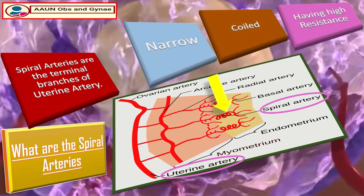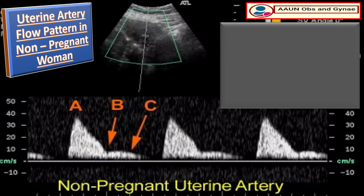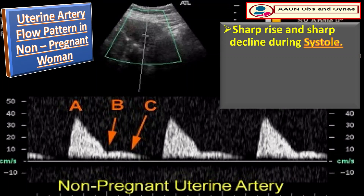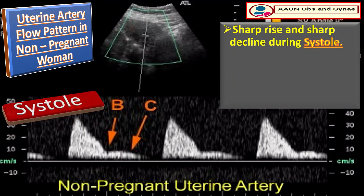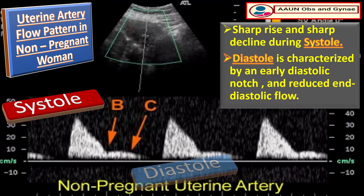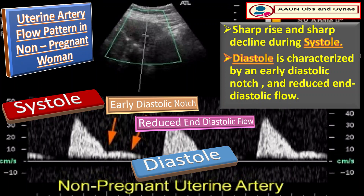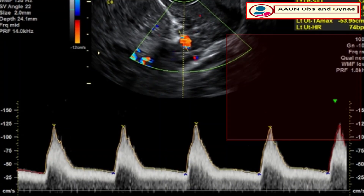The characteristic features of spiral arteries include that they are narrow and have high resistance. The normal uterine artery flow pattern in the non-pregnant woman is characterized by a short rise and short decline during systole, with the diastolic flow pattern characterized by an early diastolic notch and reduced end-diastolic flow.